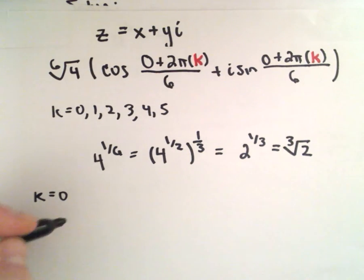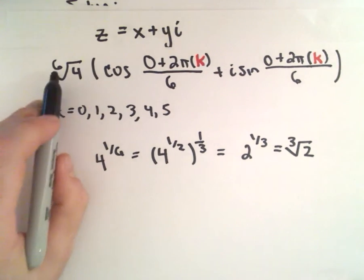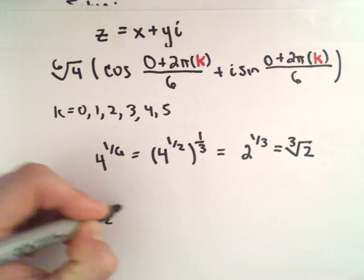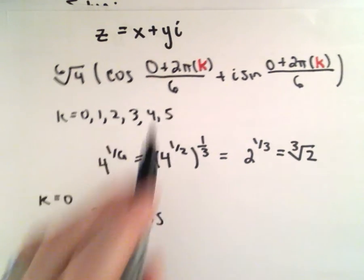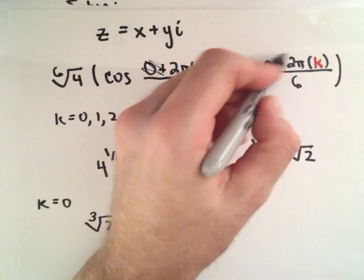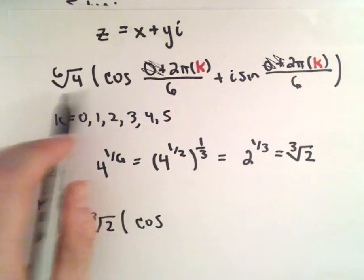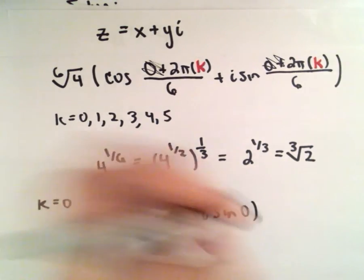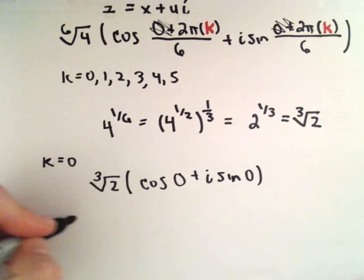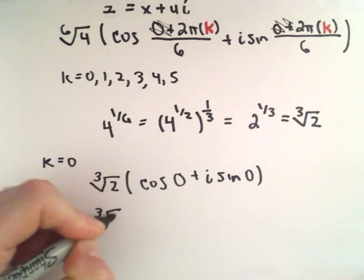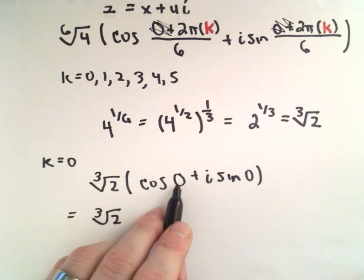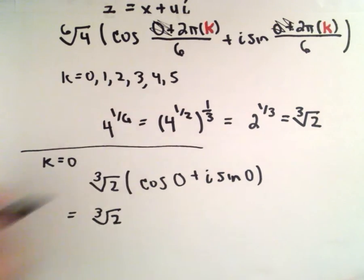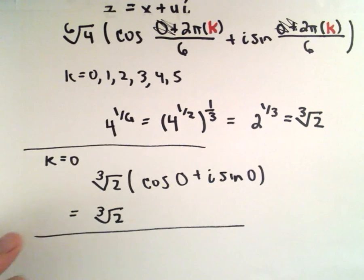When k equals 0, we'll have the cube root of 2 times cosine of 0 plus i times sine of 0. Cosine of 0 is 1 and sine of 0 is 0, so we'll just be left with the cube root of 2 as one of our solutions.